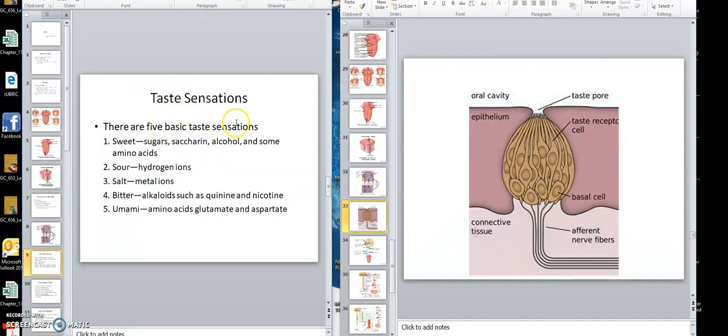There are five basic tastes: sweet, sour, salt, bitter, and umami. That's kind of the meat taste there. Any taste is a combination thereof. Sweet, sour, salty, bitter, and umami.